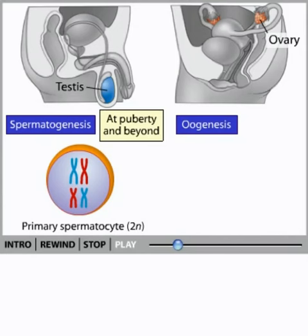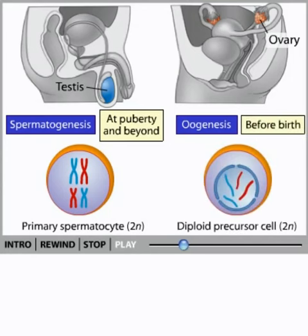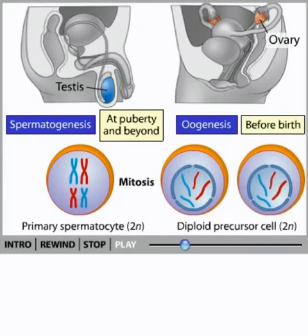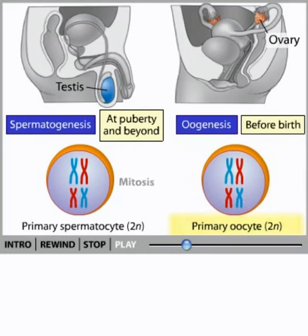In females, a similar process occurs, but it does so before birth. Diploid precursor cells proliferate by mitosis, and some of them then develop into primary oocytes that are ready for meiosis.